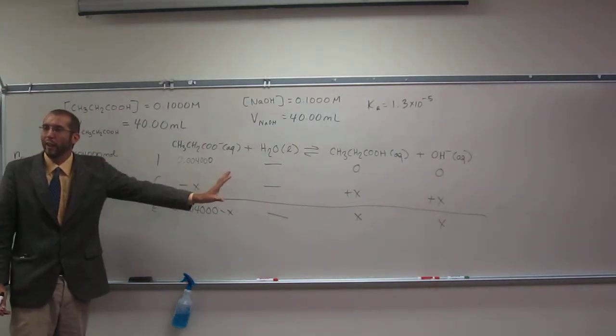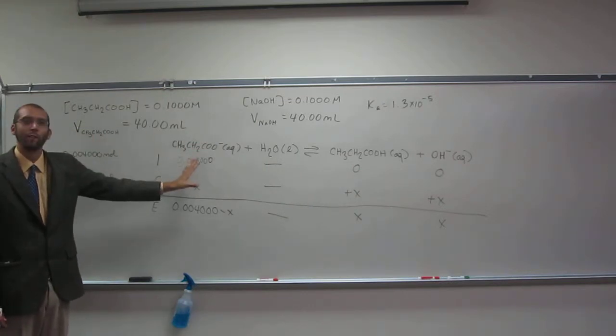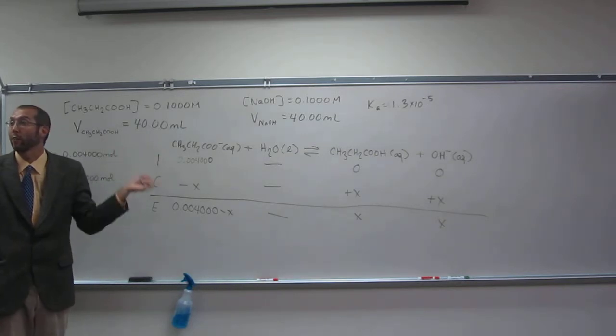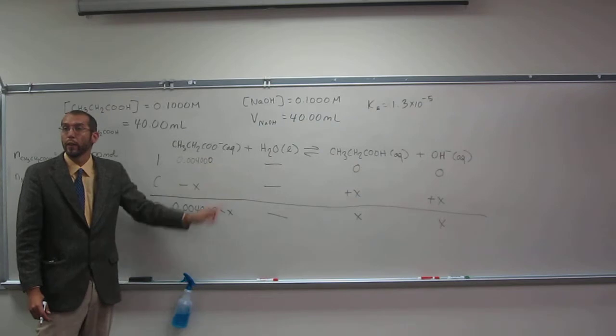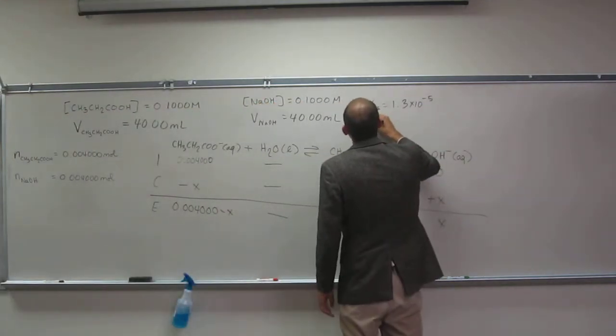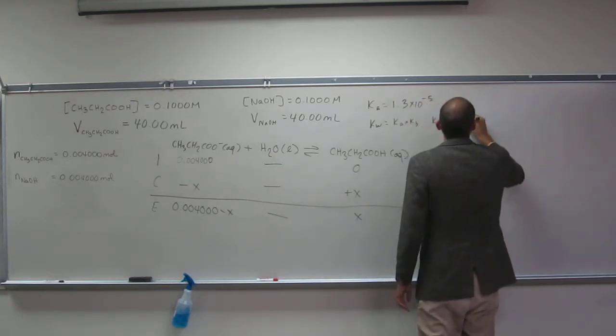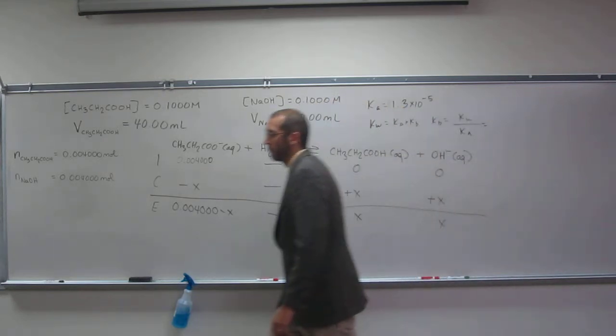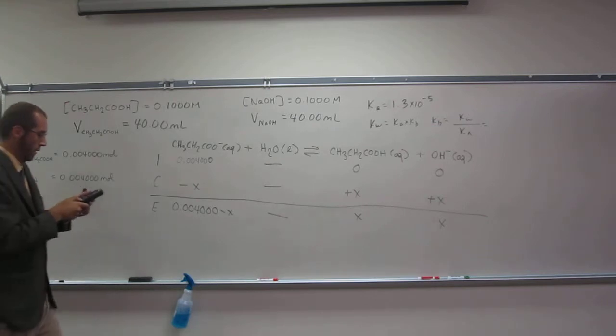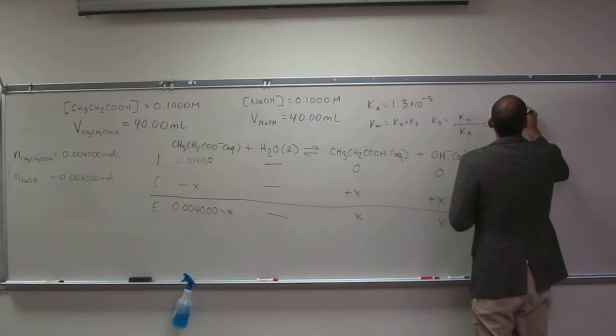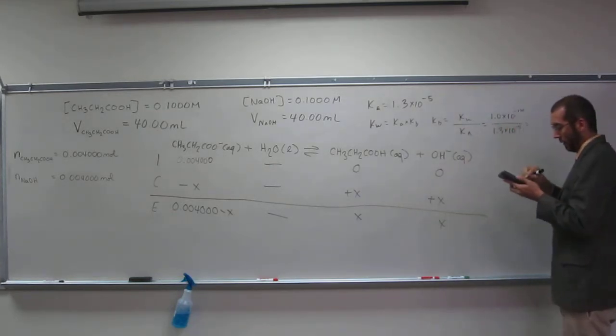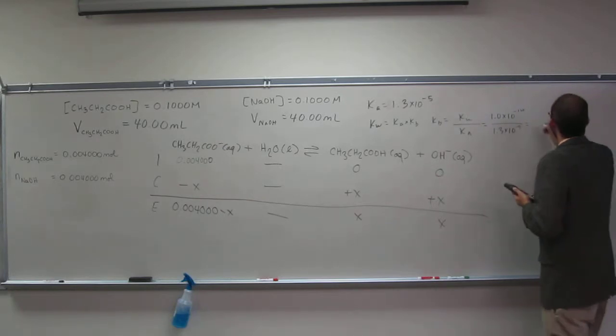Is this the equation for Ka? No. What is it for? KB. So we're going to have to figure out what KB is because this is the base here. So we got Ka here, right?